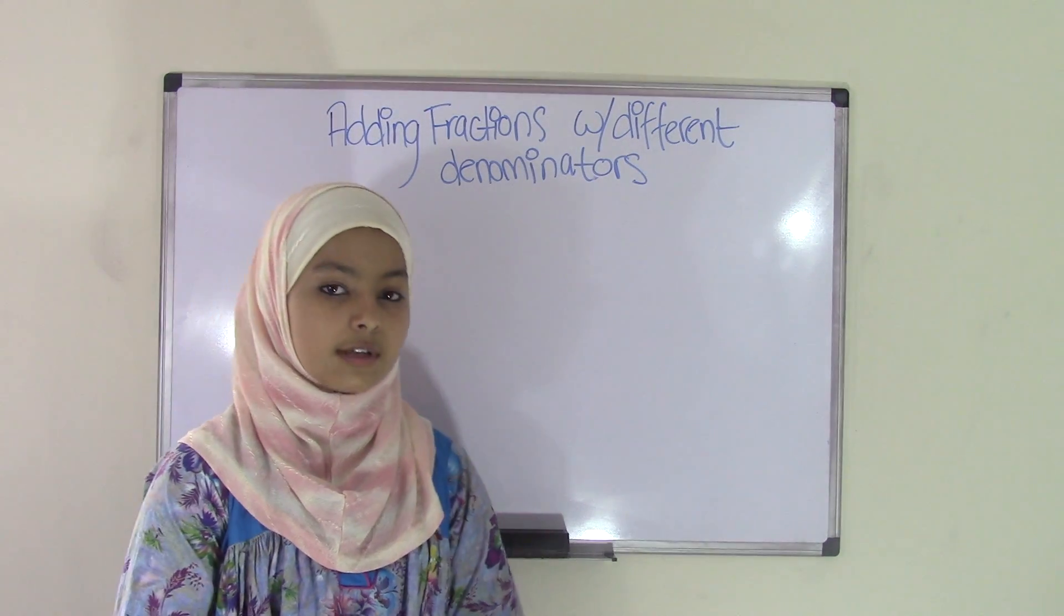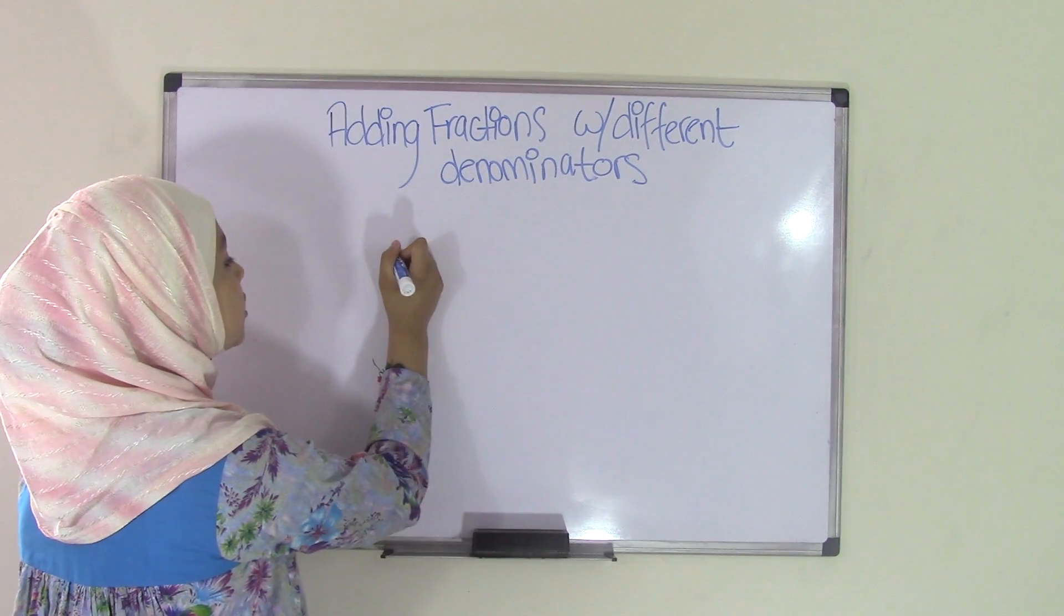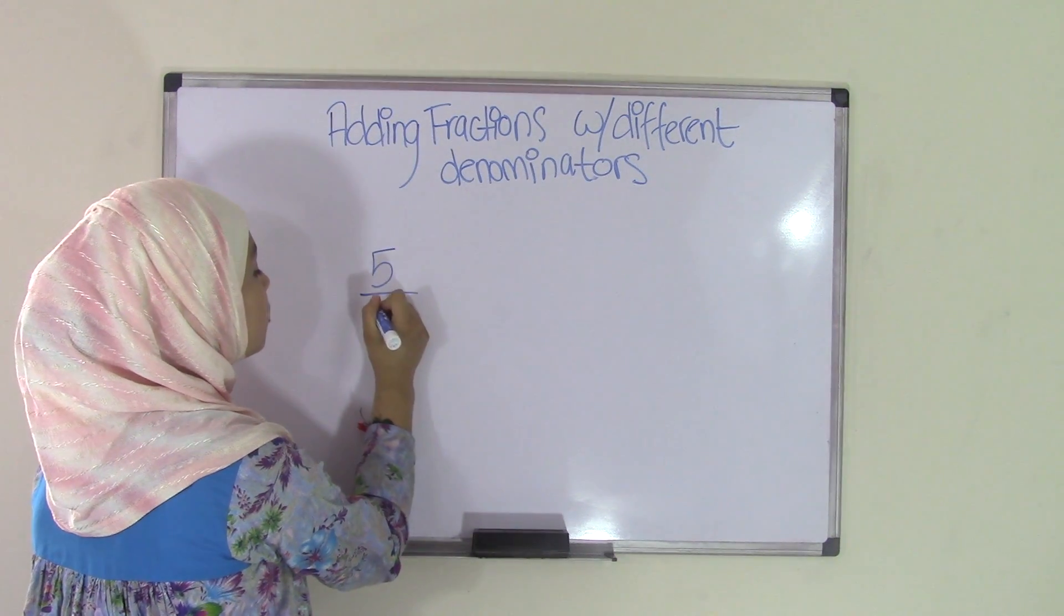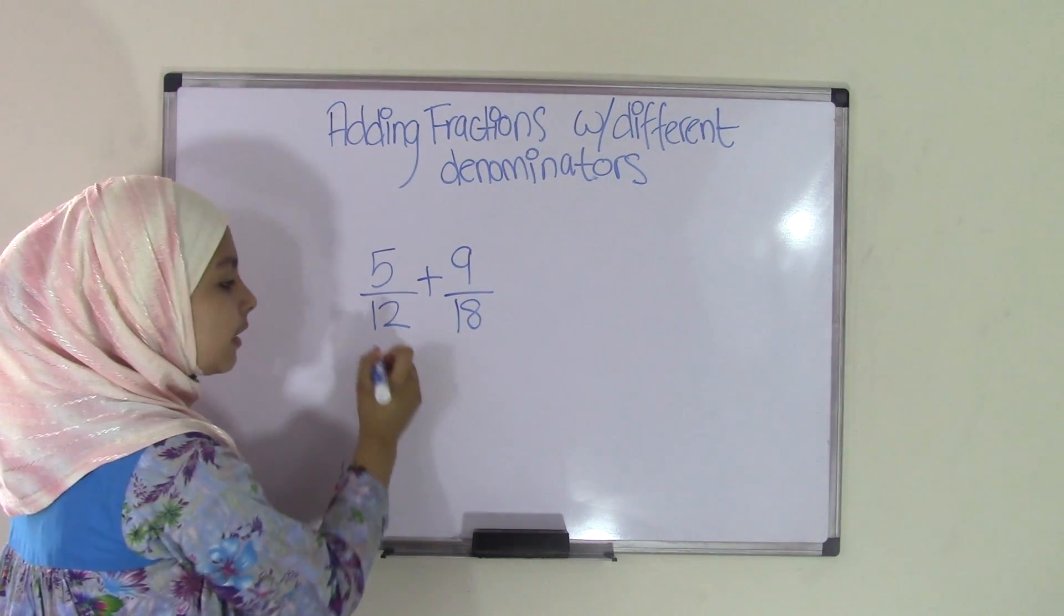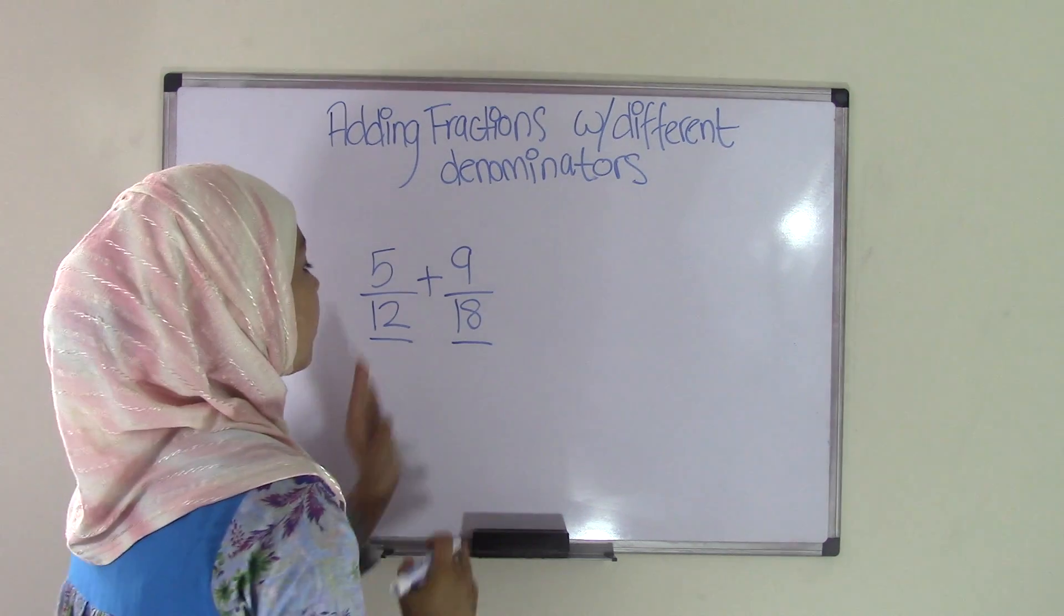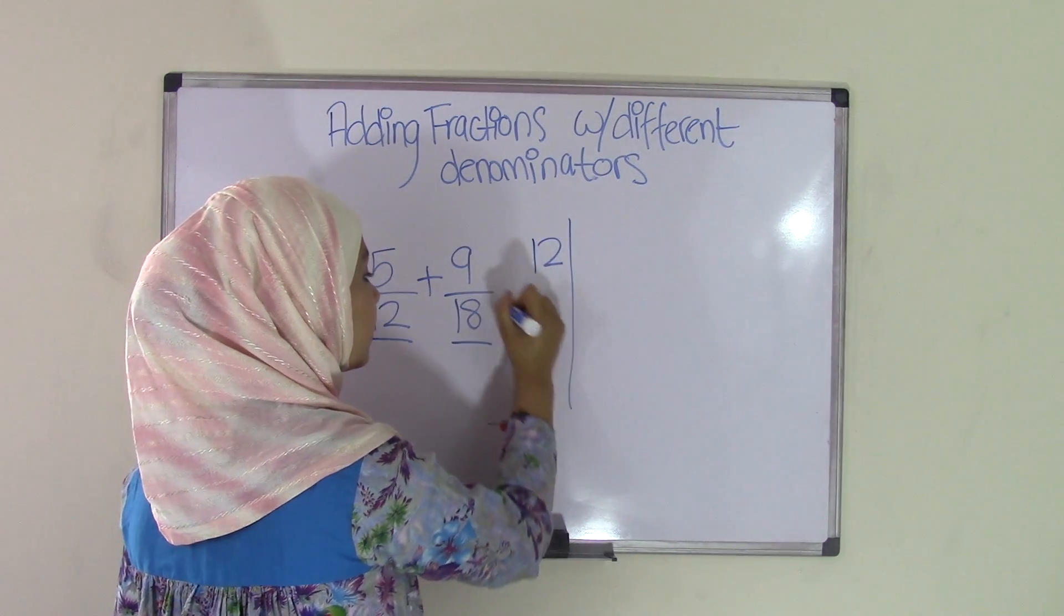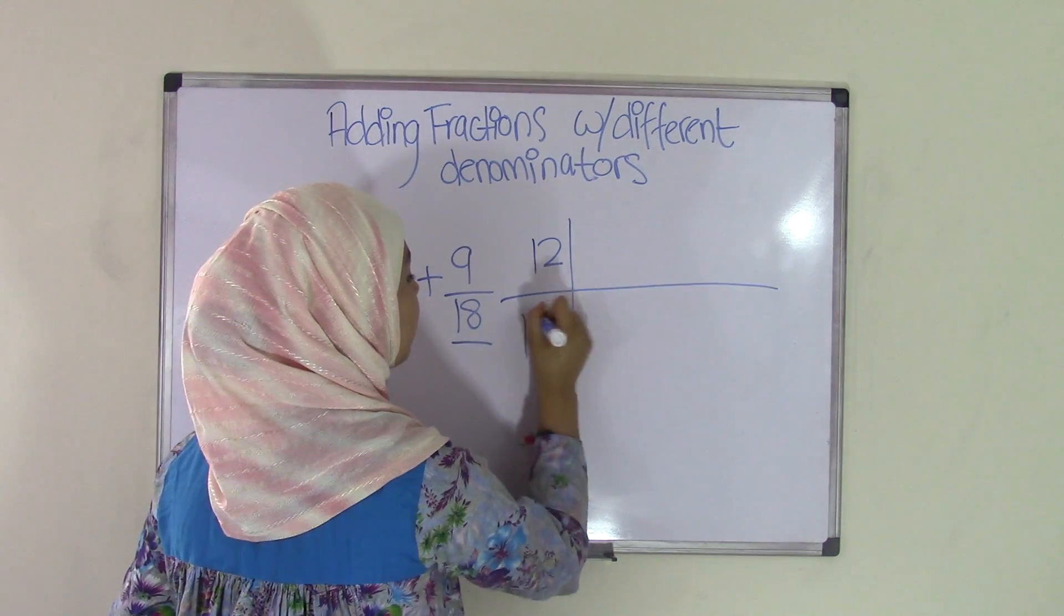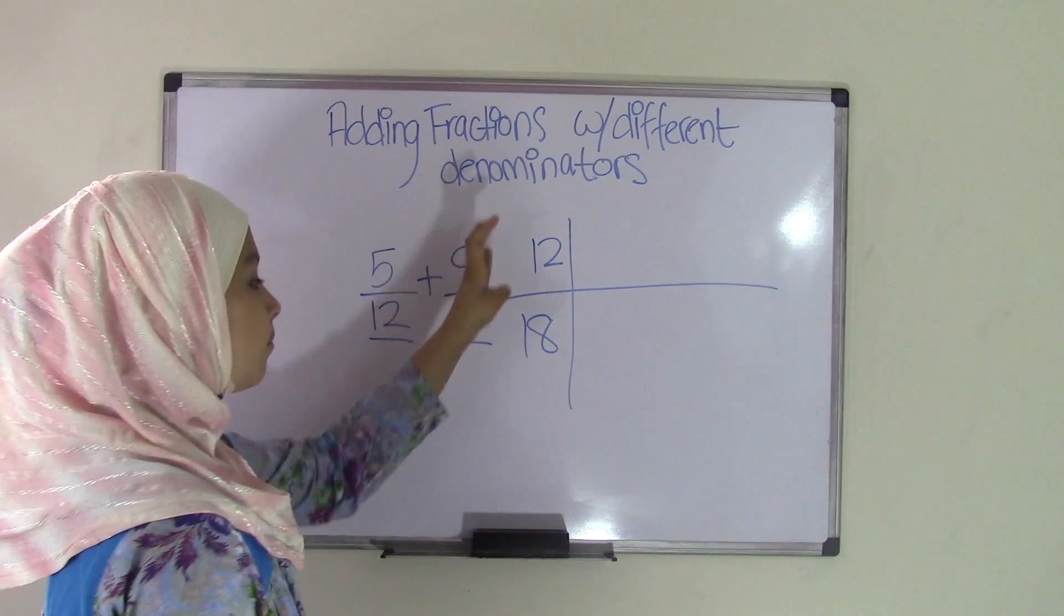So the first step we're always going to have to take is find a common denominator. So let's say we have a problem such as 5/12 plus 9/18. Okay, as you can see, these two denominators are different. So what we're going to do is come over here, write 12 and 18, and we are going to find the common multiples of both of these numbers.